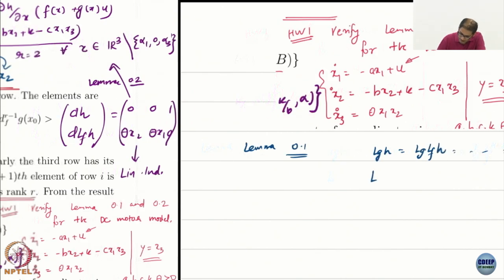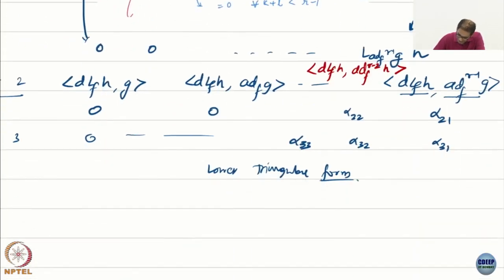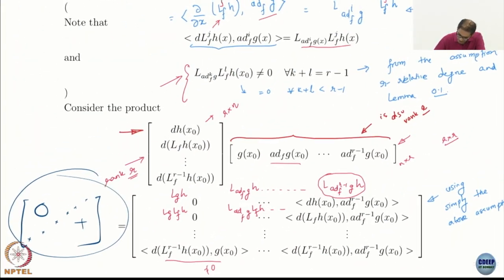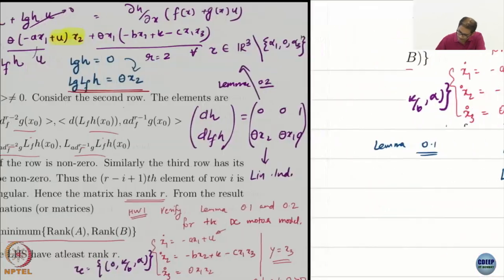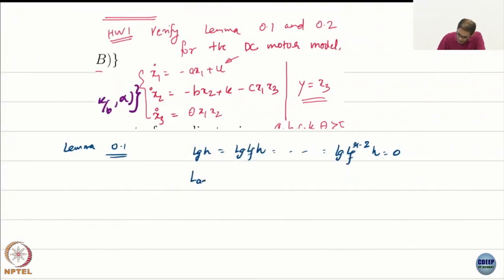Then you can basically claim that l add f k g h is 0 for k equal to 0 to r minus 2. Because I am just specialized it to relative degree r. So the first thing we want to do obviously is to compute these. Let us start computing. So first things first, what is f, what is the drift vector field?